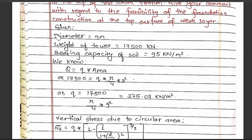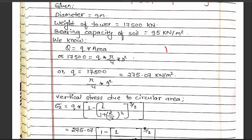The total load is 17,500 kN and the bearing capacity of the weak layer is 95 kN per meter square. The radius r is 9/2 = 4.5 m. The intensity of loading q is calculated from the circular area: q = 17,500 divided by (π/4 × 9²), giving q approximately equal to 275 kN per meter square.